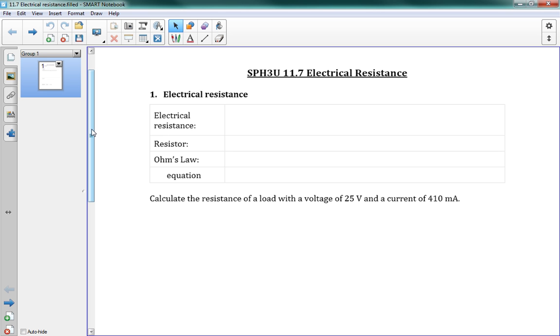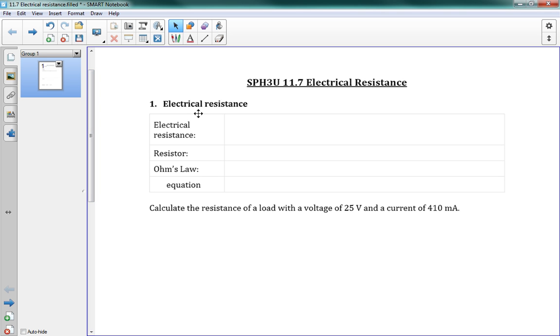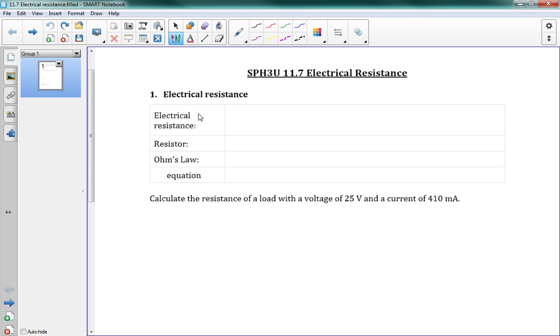So what is electrical resistance? We call it R. I'll just put that down here. It is how difficult it is for electrons to flow through a material. That's resistance. It's what it sounds like - it's how much a material resists the flow of electrons.